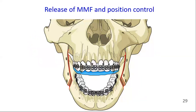After completion of osteosynthesis on both sides, the MMF is released and the resulting occlusion is checked against the planned position. The splint may be fixed to the maxillary teeth with a few thin wires and left in place during the healing phase to allow for neuromuscular adaptation and position control.